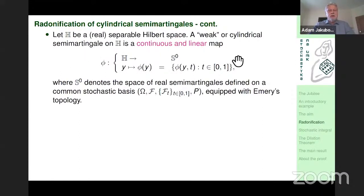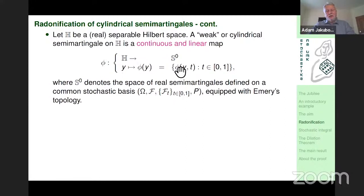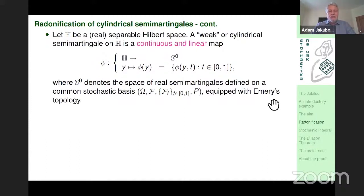When we take a Hilbert-Schmidt operator we obtain a usual process which we call the radonification of the cylindrical Brownian motion, or we say that T radonifies this Brownian motion. The general definition of a cylindrical semi-martingale — given in the most useful form — is that Φ is a map from some Hilbert space to the space of semi-martingales on some stochastic basis, linear and continuous when we equip the space with Emery's topology.